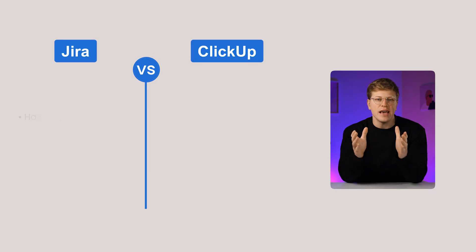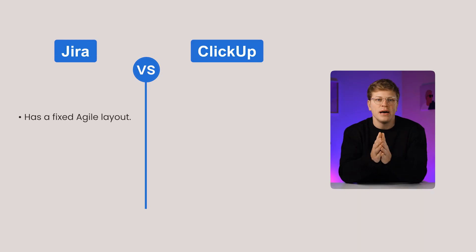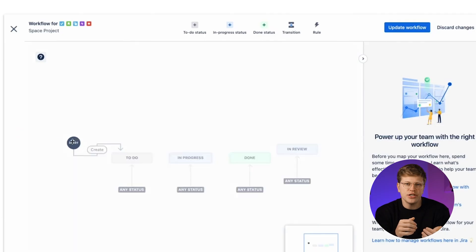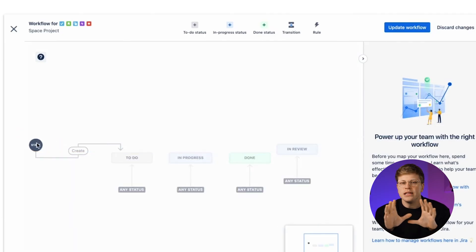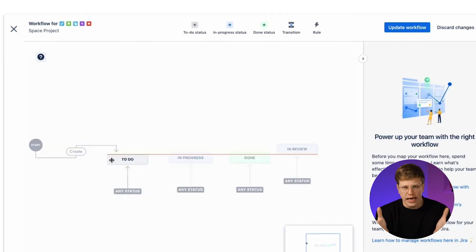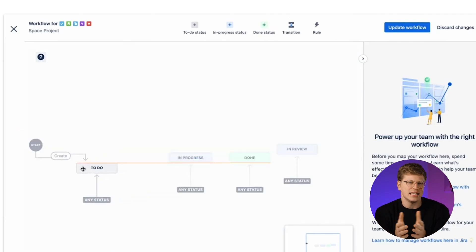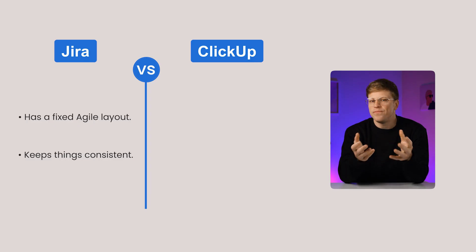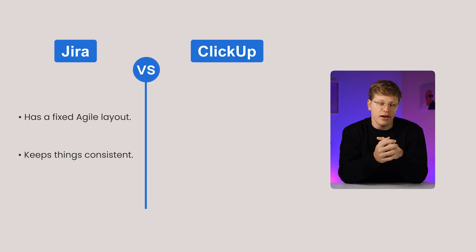Design and customization. JIRA uses a fixed setup based on agile methods. You can tweak workflows and permissions, but the overall layout stays the same. This makes it consistent, but not very creative.